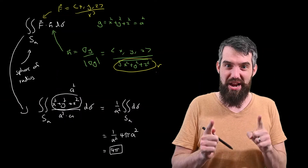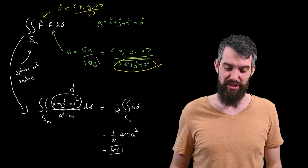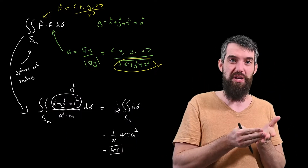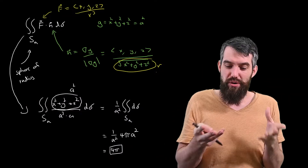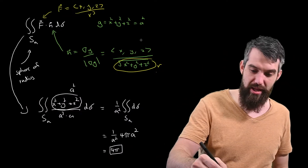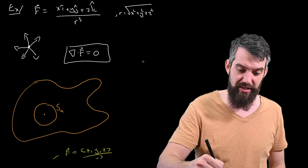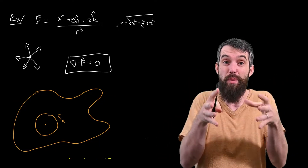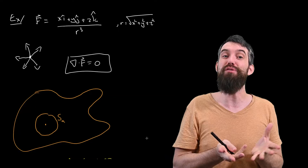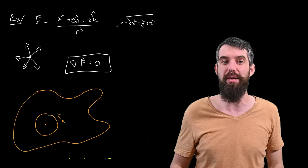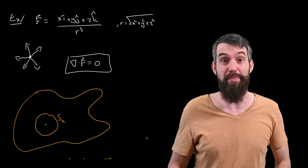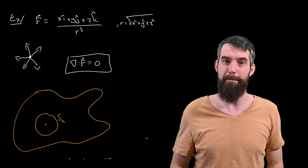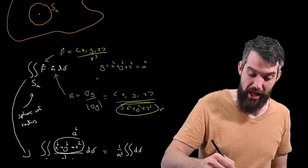So we've computed that the flux of this particular field across a small sphere of radius A is 4π. Going back to what we talked about previously: if the flux across the sphere of radius A equals the flux across any arbitrary surface enclosing it — because the divergence is zero in the region between them — then the flux across that arbitrary surface is also 4π. We're now just about ready to state Gauss's Law.